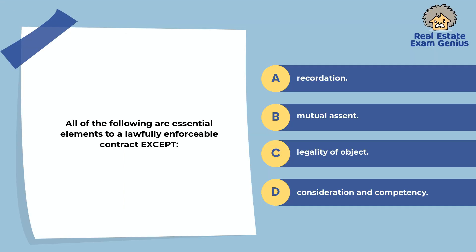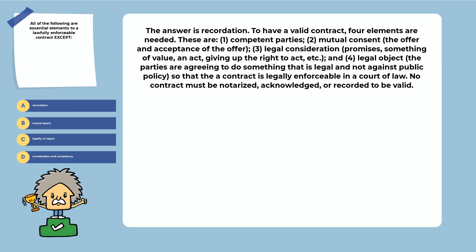All of the following are essential elements to a lawfully enforceable contract except: recordation, mutual assent, legality of object, or consideration and competency. The answer is recordation. To have a valid contract, four elements are needed: competent parties, mutual consent, legal consideration, and legal object so that the contract is legally enforceable in a court of law. No contract must be notarized, acknowledged, or recorded to be valid.